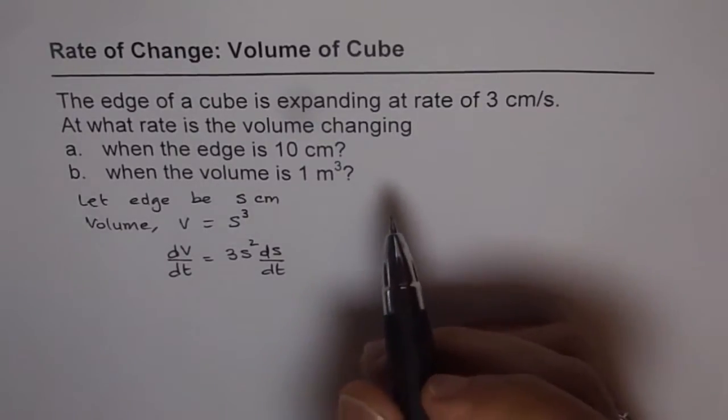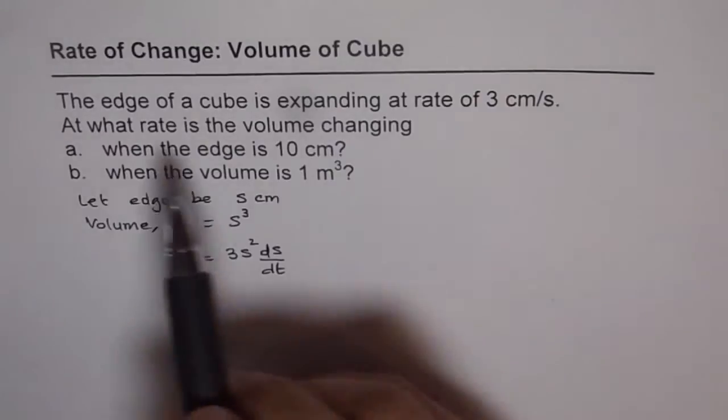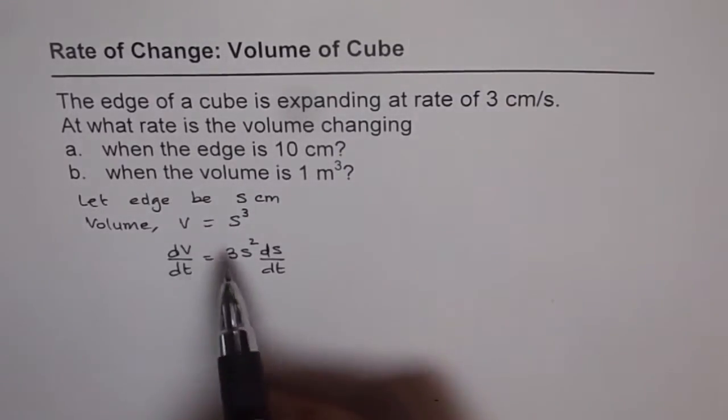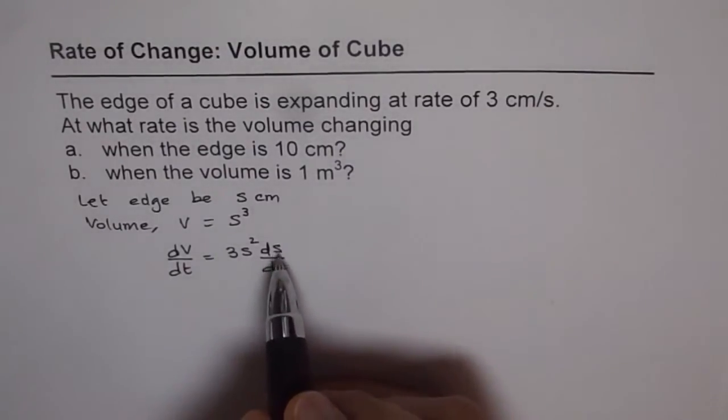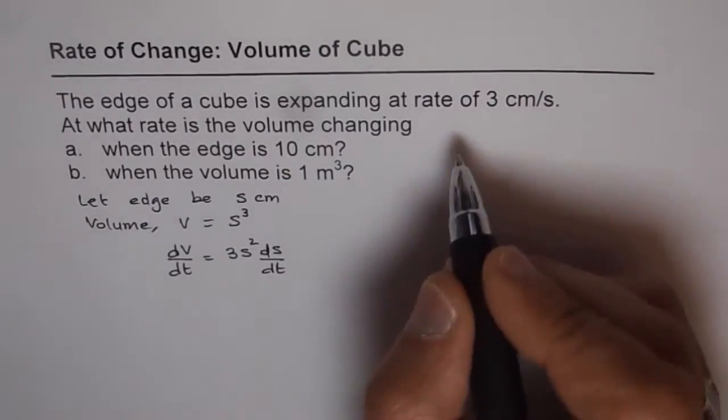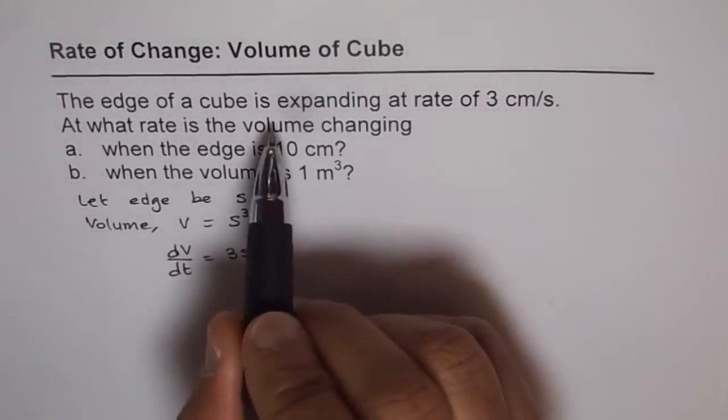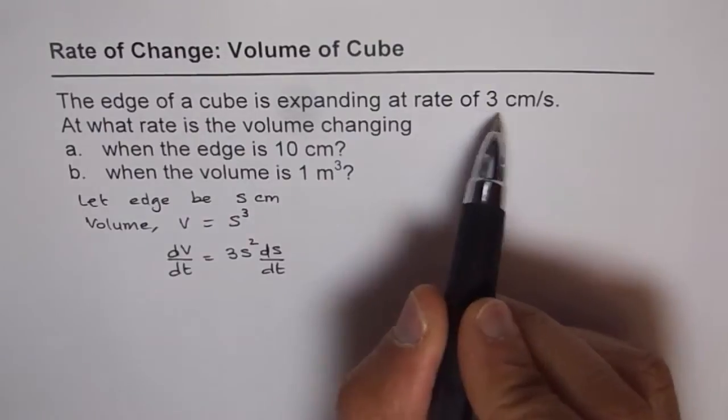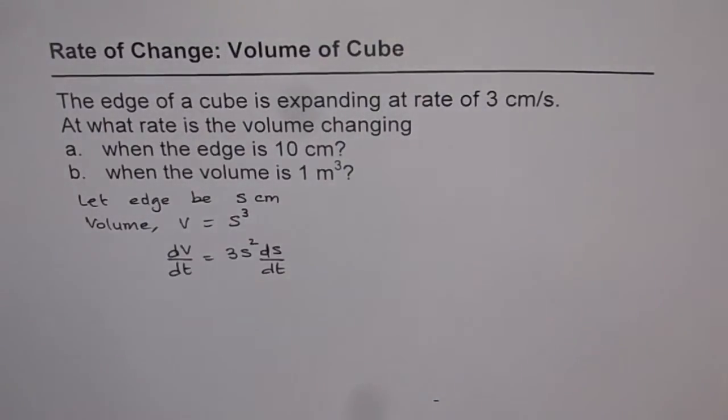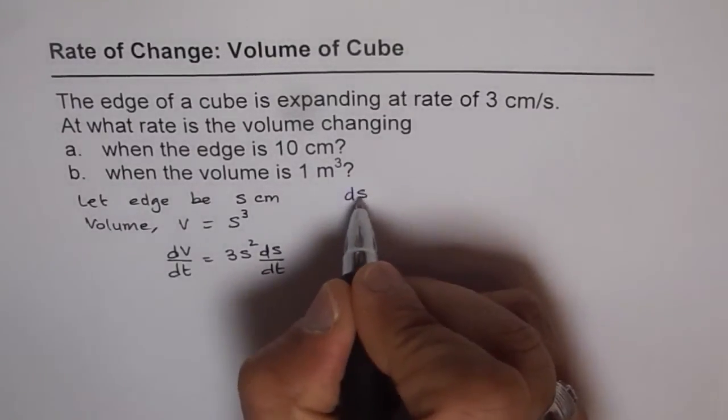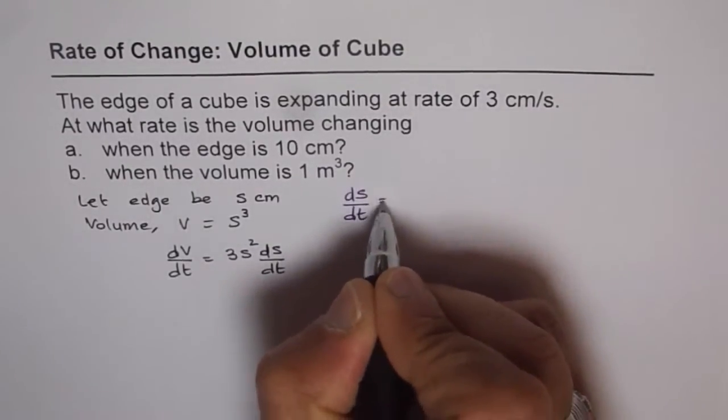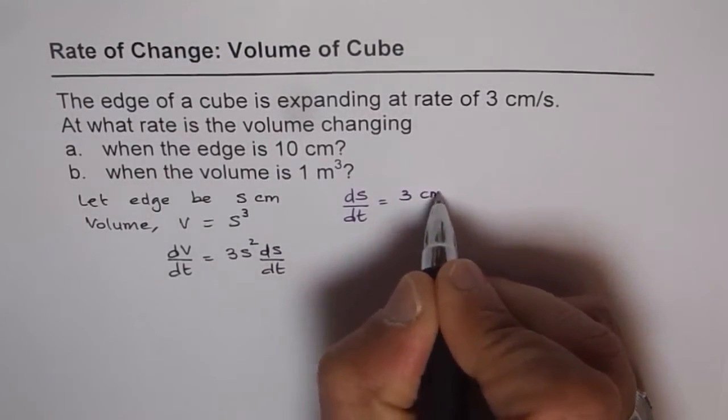Now what do we need to find? We need to find at what rate is volume changing when the edge is 10 centimeters. So when we know the edge is 10 centimeters, we can find the rate knowing the rate of change of edge, which is also known to us. It is known that the edge is expanding at a rate of 3 centimeters per second. So we know that ds/dt equals 3 centimeters per second.